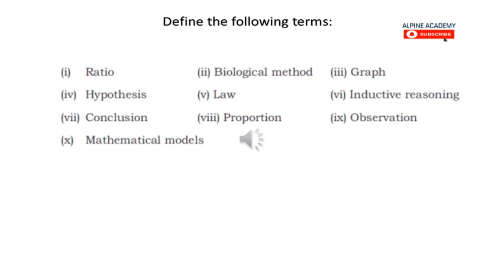Law: a scientific law is a uniform and constant fact of nature. It is a hypothesis or experiment that has been repeatedly verified and is virtually an irrefutable theory. Biology is short on laws due to the puzzling nature of life — in biology there are relatively few laws.